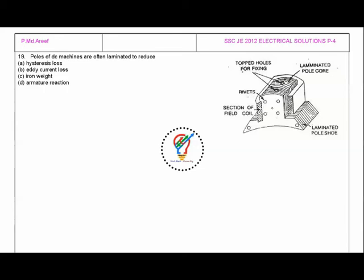This is the pole core here and the pole shoe. As you can see, they are laminated pole shoes and laminated pole cores to reduce eddy current losses. Always remember that any machine which is laminated means it's in order to reduce eddy current loss.